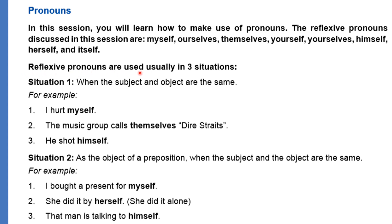Reflexive pronouns are used in three situations. For example: 'I hurt myself' — here 'myself' is a reflexive pronoun. 'The music group called themselves Dire Strides' — 'themselves' refers to the group itself. 'He shot himself' — 'himself' is a reflexive pronoun. A pronoun is a word used in place of a noun, and reflexive pronouns denote the subject itself.